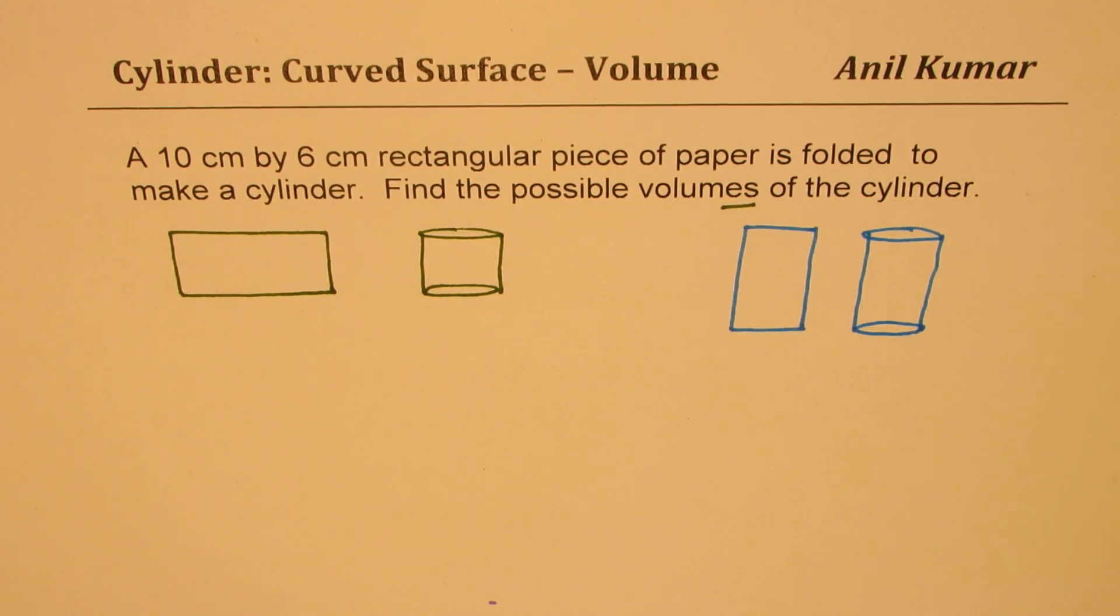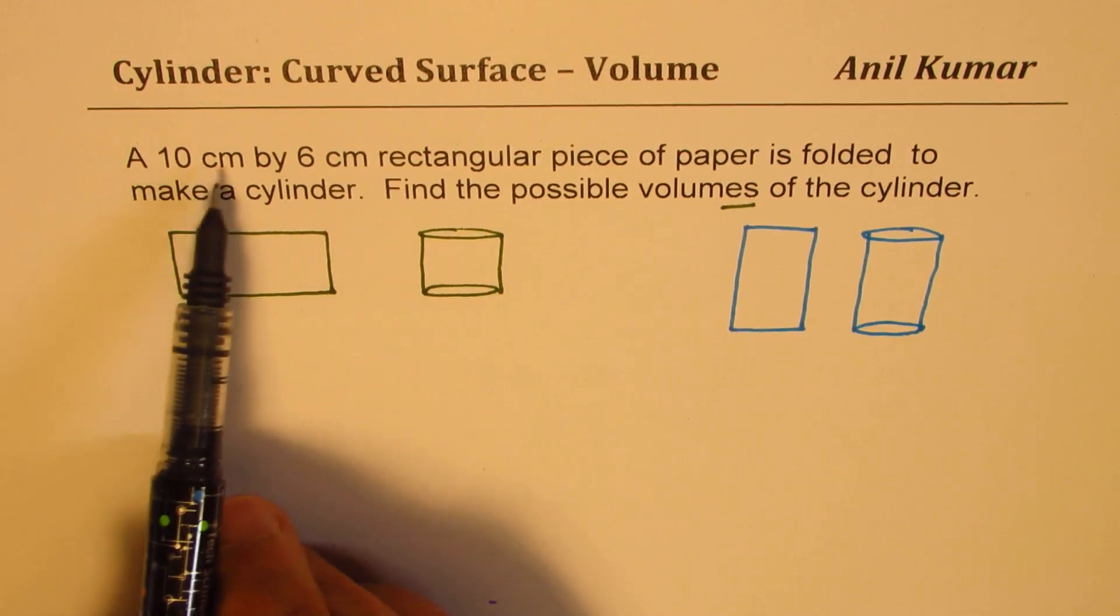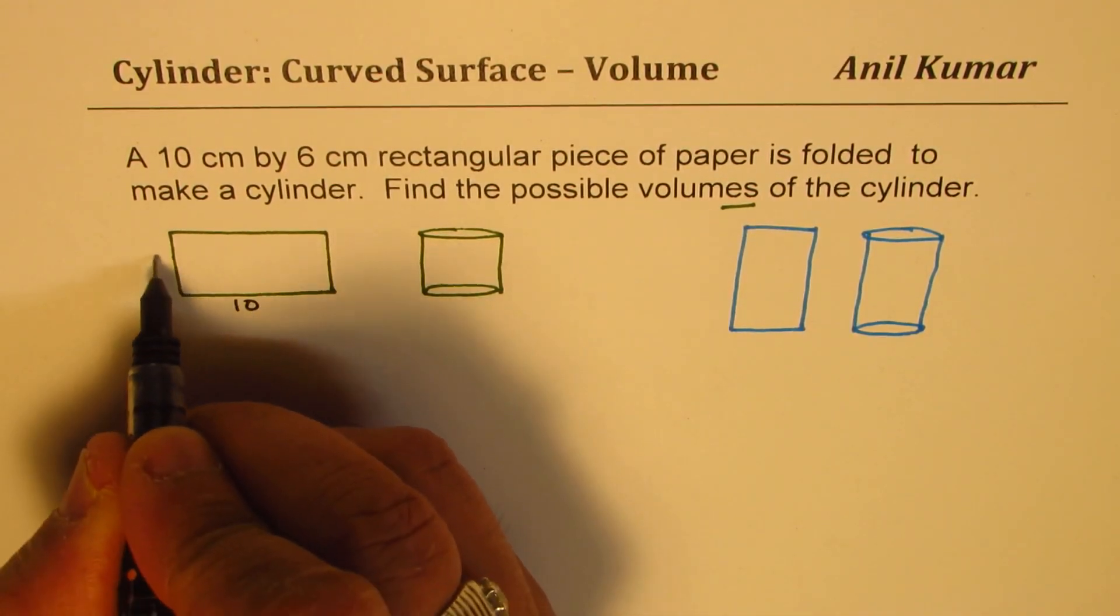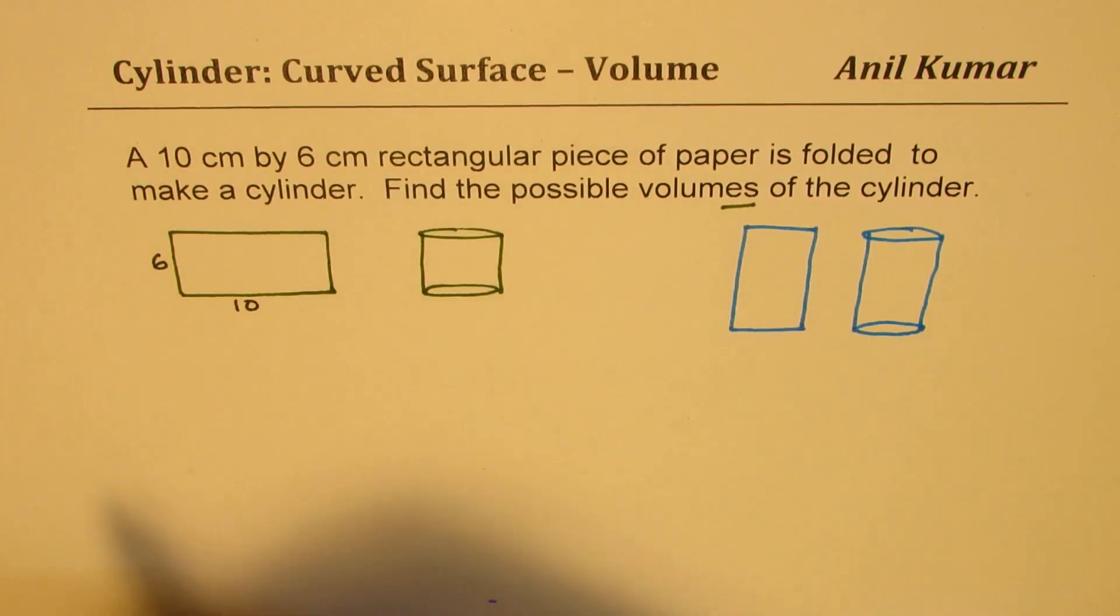I'm not sure whether these volumes are going to be same or not. So you need to figure this out. So you can pause the video, answer the question, and then look into my suggestions. So let's begin with the very first one. So a 10 centimeter by 6 centimeter rectangle. So this is 10 and this is 6. All units are in centimeters.